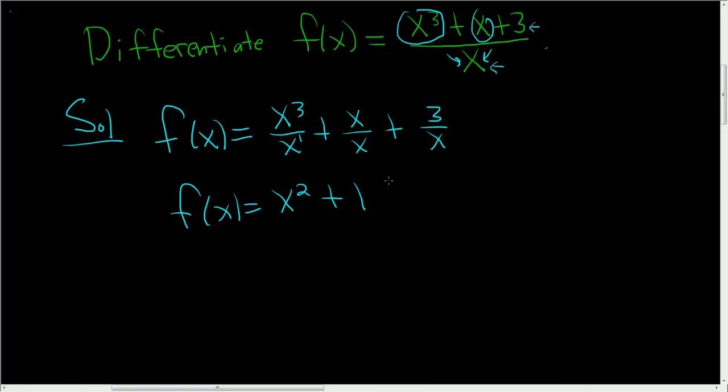x over x is 1, and we have to differentiate this at some point, so we'll bring this upstairs and we'll have 3x to the negative 1.